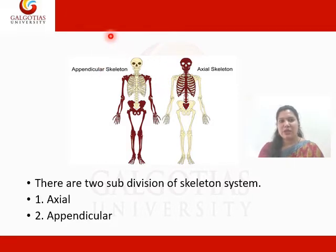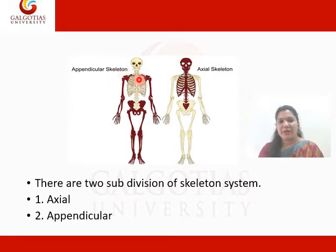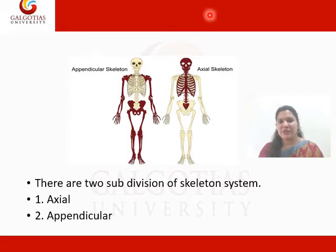The upper limb and shoulder girdle, and pelvic girdle and lower limb, these consist of the appendicular structure. The axial skeleton includes the skull, the facial bones, the thorax and the spine.